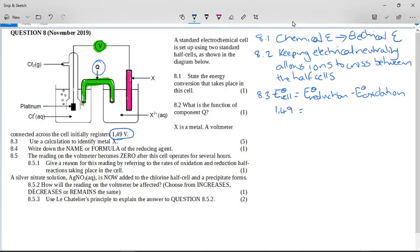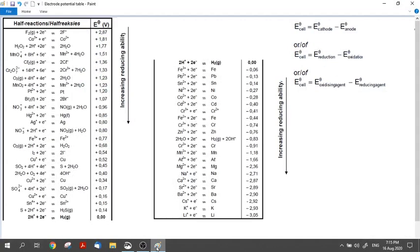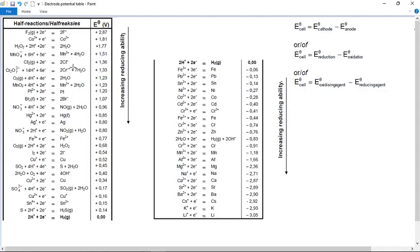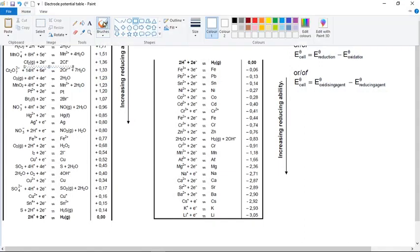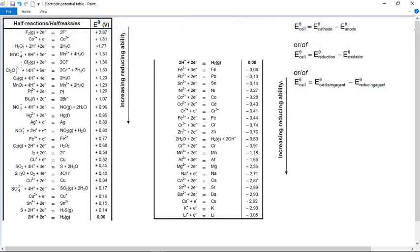It says initially the cell is registering 1.49 volts, so that is the total voltage coming out of the cell. We've got chlorine going to chlorine gas and X going to X ions. So we need to get the value for the chlorine half reaction from the table. If we come here and have a look in the table, can you see here is the chlorine reaction.